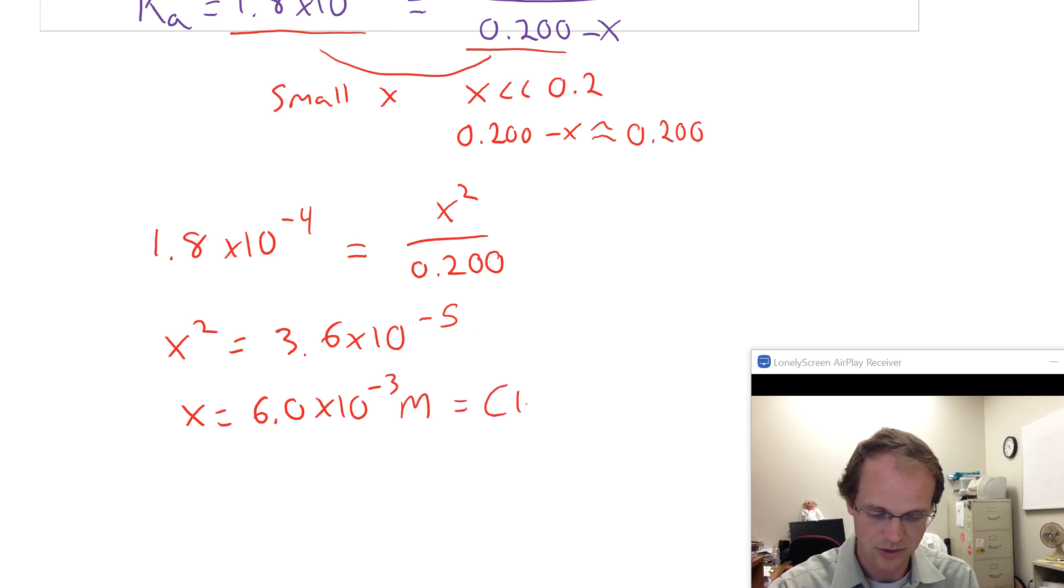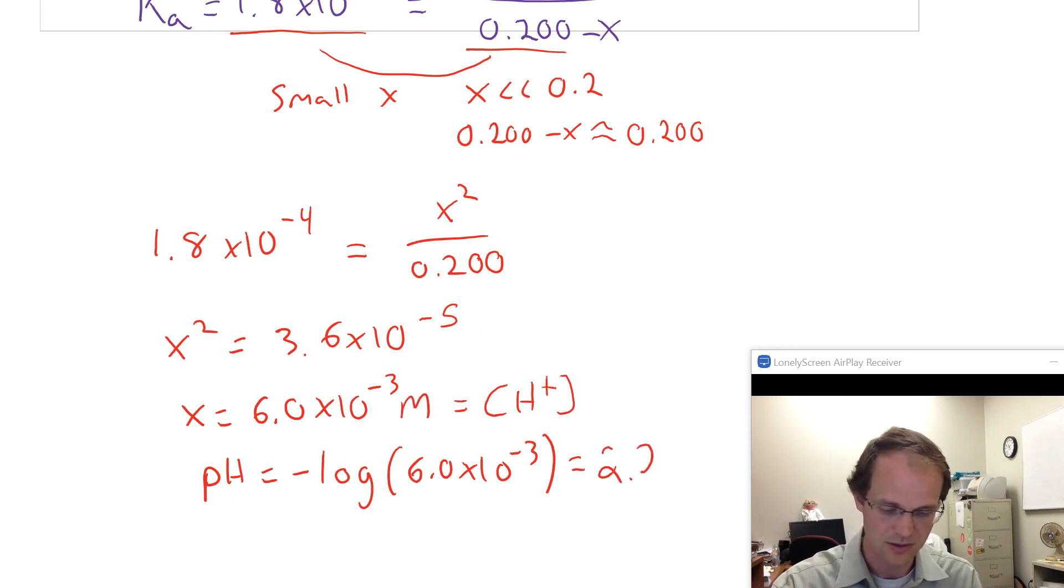X is equal to 6.0 times 10 to the minus 3rd molar, and that's also equal to the concentration of H plus. Since that's equal to the concentration of H plus, we can find the pH by just taking the negative log of that: negative log base 10 of 6.0 times 10 to the minus 3rd. You end up with an answer of 2.22.